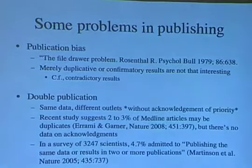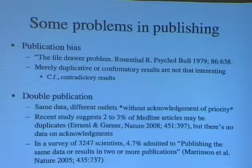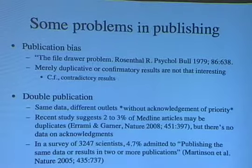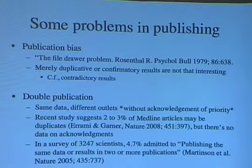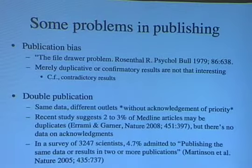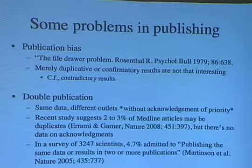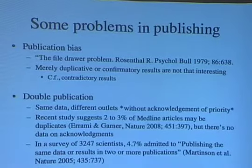There are various problems in publishing. One is publication bias — what Rosenthal called the file drawer problem. There's a perception that editors are biased toward novel and interesting results and against negative results, so authors don't write up and submit negative findings. It's pretty clear that merely duplicative or confirmatory results are less interesting to journals than contradictory or totally new results. If you duplicate a paper already in Nature or Science, they won't take it, which diminishes the drive to do duplicative work.